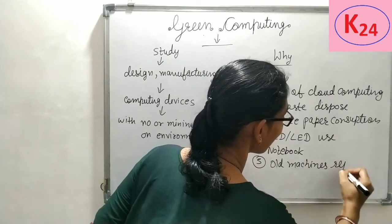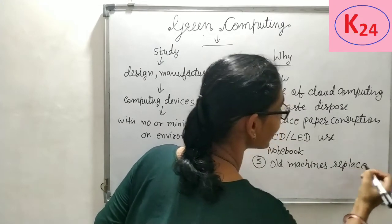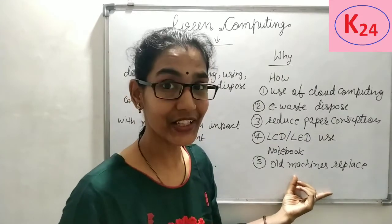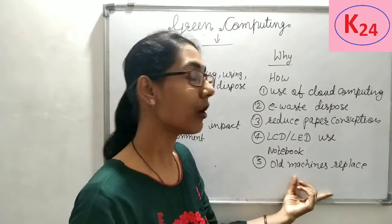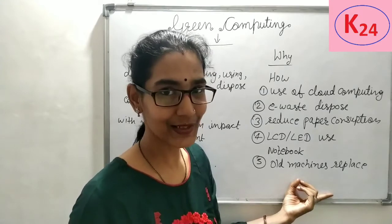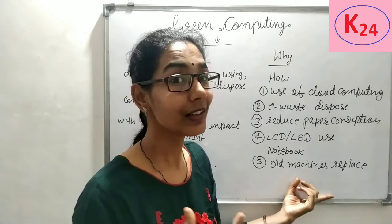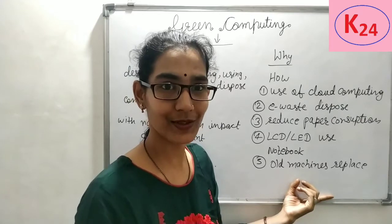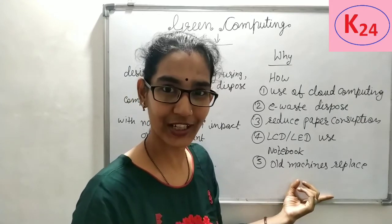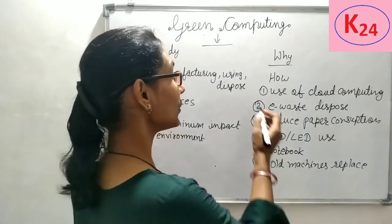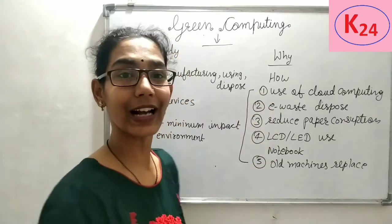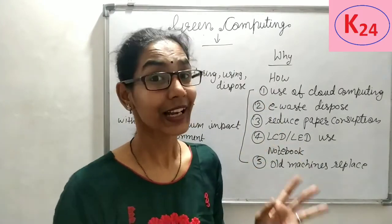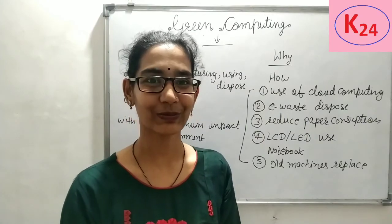The fifth method is to replace old or obsolete machines and devices with new or modern machines, which produce less heat, have increased processing speed, lower power consumption, and use resources more effectively and efficiently. These are the basic ideas of how we can implement green computing. Thank you.